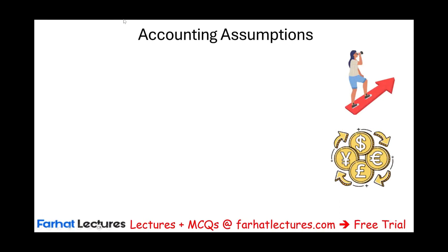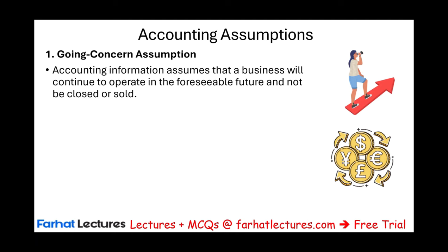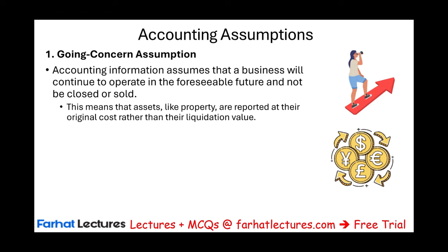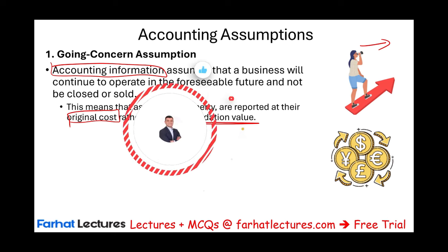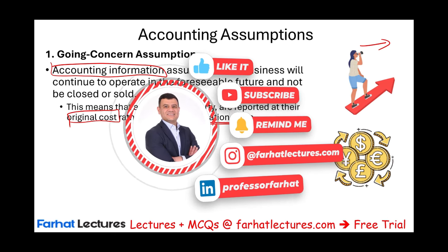Now let's discuss a few accounting assumptions. The first is the going concern assumption. This assumption assumes that a business will continue to operate in the foreseeable future and not be sold or closed. When you prepare financial information, you assume the business is operating practically forever. This means that assets like property are reported at original cost rather than liquidating value. If you have a building, a truck, or any asset, you report it at its original cost — not how much you can sell it for — because you're assumed to be in business forever.